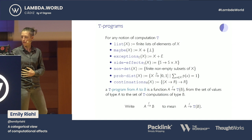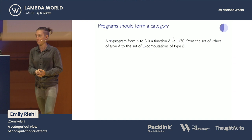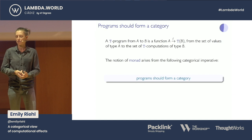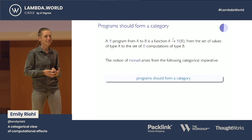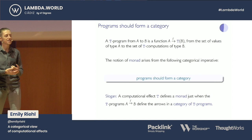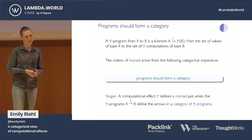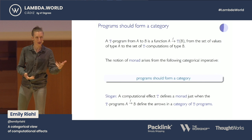Recall a T program — it's a function from A to T of B for some sets A and B. Now I want to bring monads into the picture. Monads are really motivated by something we might call the categorical imperative, which says that these programs should form a category — in other words, programs should be composable. The first slogan: a computational effect defines a monad just when its T programs can be given the structure of a category. We'll refer to this as the category of T programs.